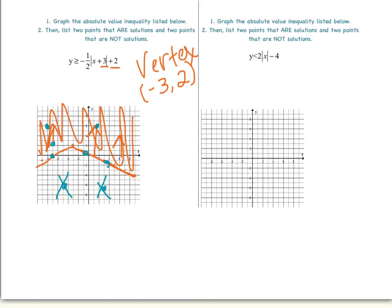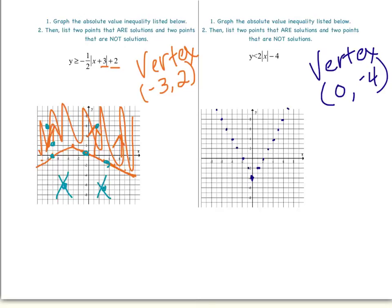Now let's look at the next example. Our vertex is 0, negative 4. When we plot 0, negative 4, I look at the a value. It's positive, so I know that my V is going to be opening upward. I can use 2 as my slope starting from the vertex. I go up 2 to the right 1, up 2 to the right 1, and continue that. Then I go back to the vertex and go up 2 to the left 1, up 2 to the left 1, and continue. Because this is just a less than symbol, I need a dashed line.